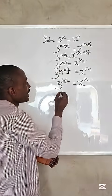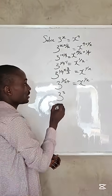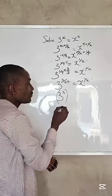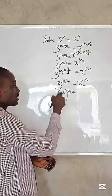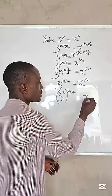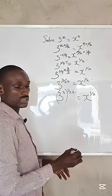From here, we can have 3 raised to the power of 3. Don't forget, everything in brackets, 1 over 27, because 3 times 1 will give us 3, equals x raised to the power of 1 over x.